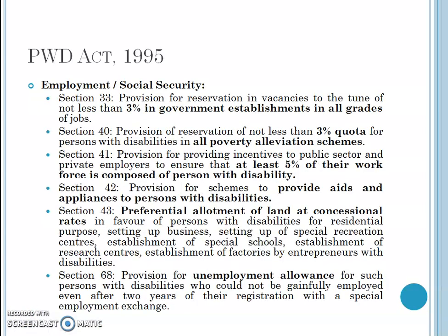The next point covers employment and social security. Section 33 provides for reservation of vacancies to not less than 3% in government establishments — in all grades and all cadres of jobs, there is a 3% reservation for physically impaired people. Section 40 provides for reservation of not less than 3% quota for persons with disability in all poverty alleviation schemes launched by the government.